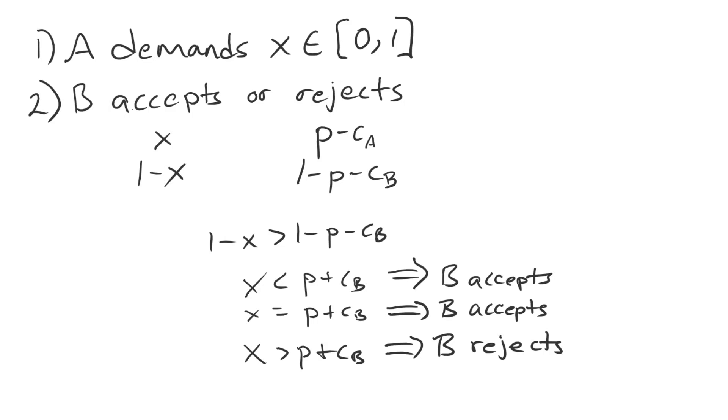What we discovered working backward was that B had to accept any X less than P plus CB, had to reject any demand X greater than P plus CB, and in the middle case where X was exactly equal to P plus CB, B was indifferent between accepting and rejecting. What we assumed before was that B would accept with probability 1, and conditional on that, we found an equilibrium where A demands that quantity P plus CB, and B accepts.